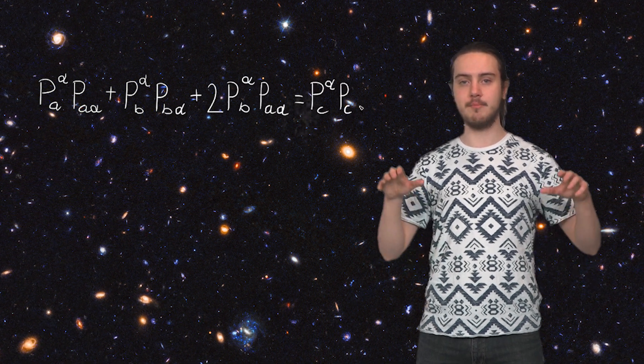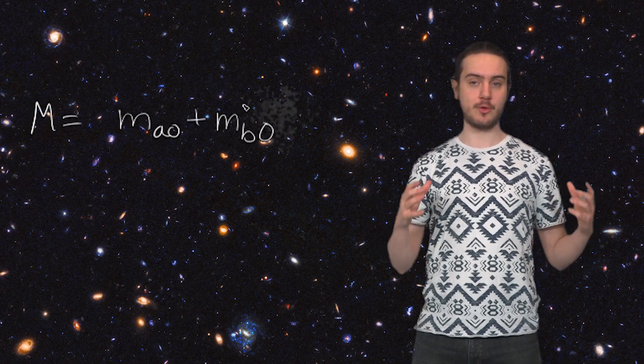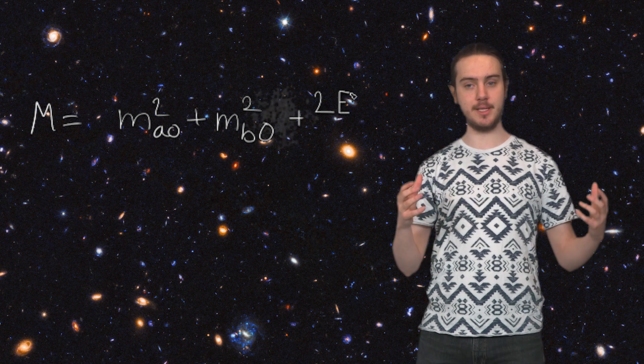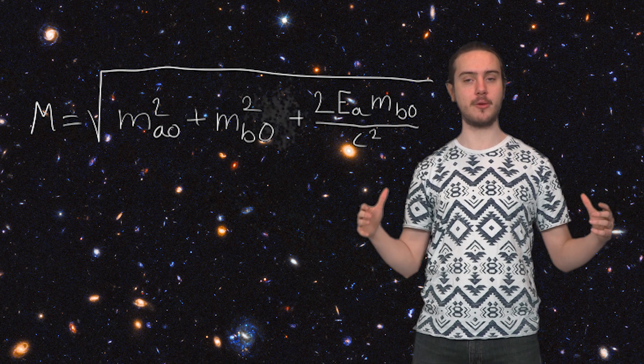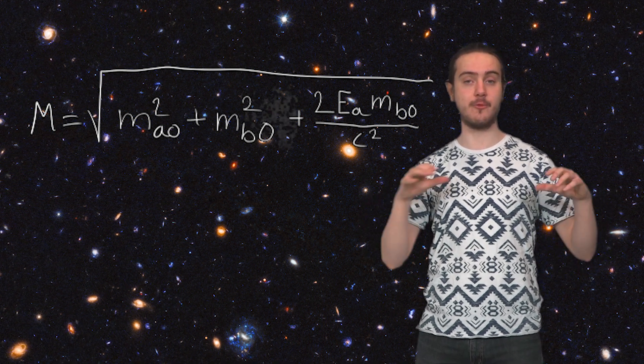This, of course, means that the threshold energy has to be equivalent to all those masses that are produced as well as their kinetic energy following the collision. This threshold energy can be calculated by using the momentum four vector from special relativity and deriving the mass required to create a certain product. In this equation, A denotes particle A and B is particle B and the capital M is the total mass of the products following the collision. The index zero designates the rest mass of the particles.